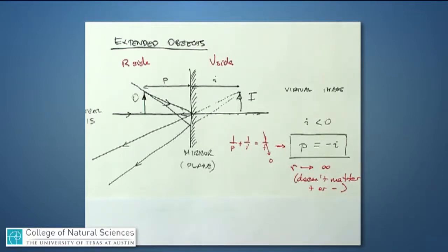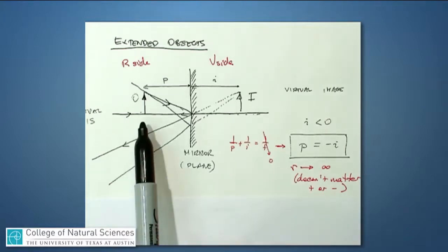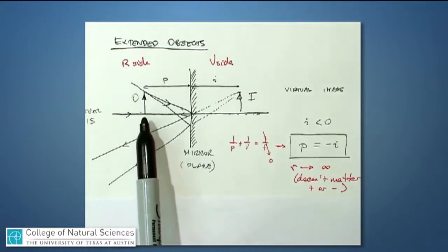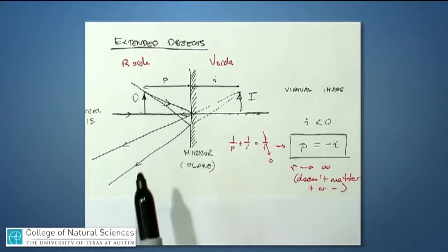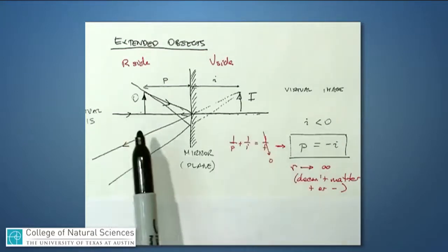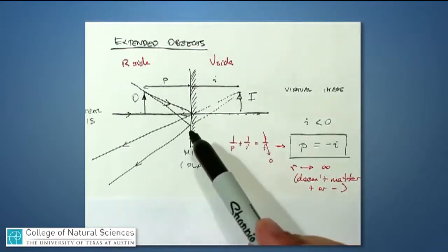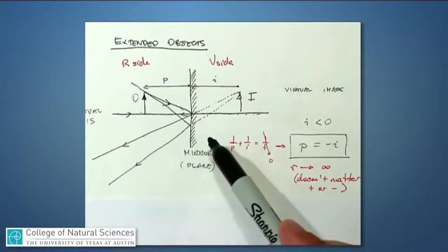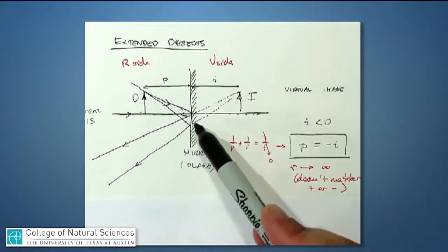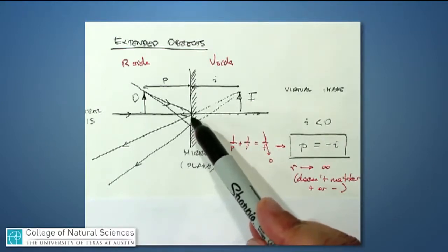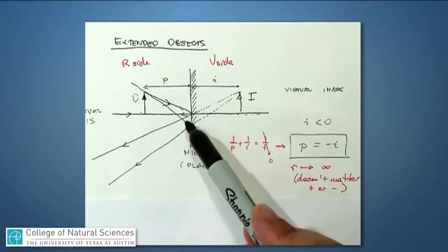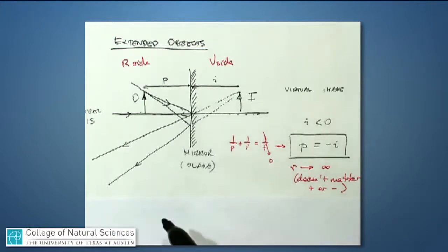I've drawn an example with a flat mirror, sometimes called a plain mirror. There's a little arrow object standing in front of this mirror — the base sits along the center axis and the tip is up there. Light coming off the tip goes in all different directions. I've drawn a couple of rays of light that obey the law of reflection — they reflect off at the same angle they come in.